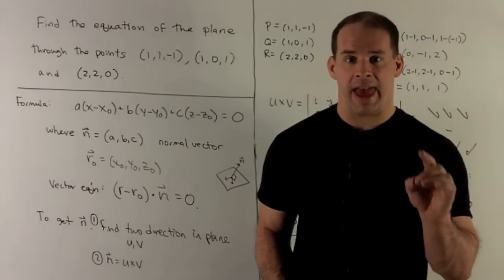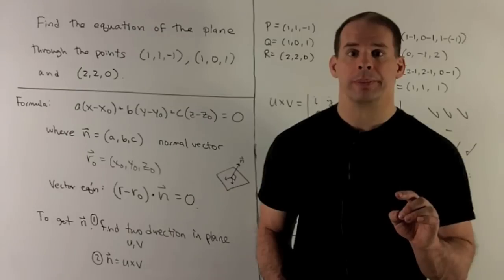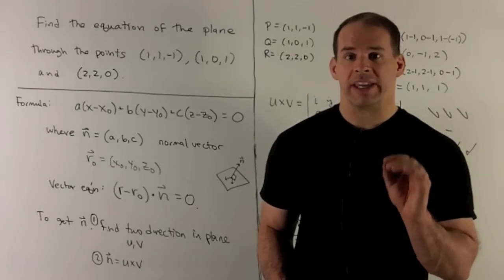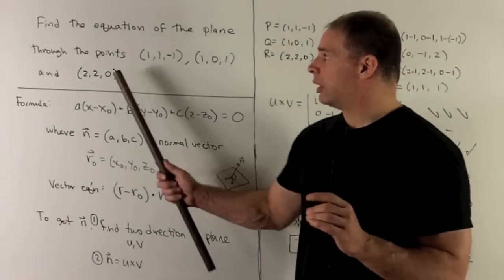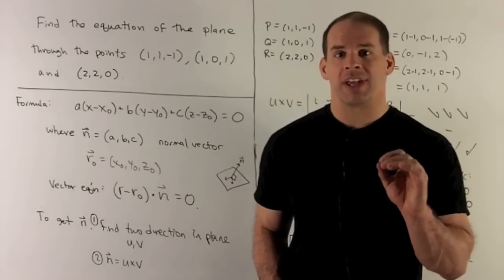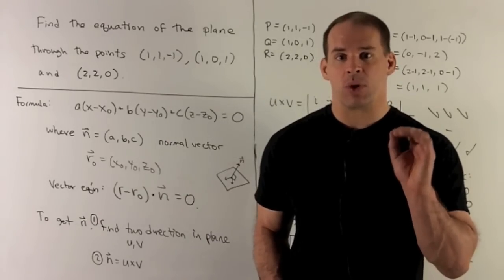So I need to find N and R₀. If you note, we have three candidates for R₀. It won't matter which one we choose. At the end of the day, we'll have the same equation of the plane.